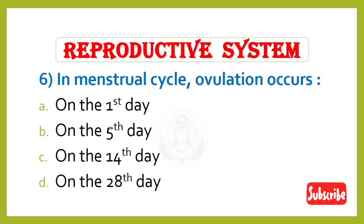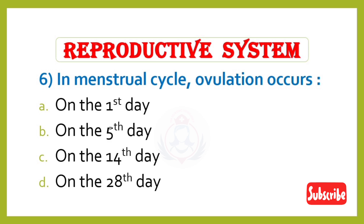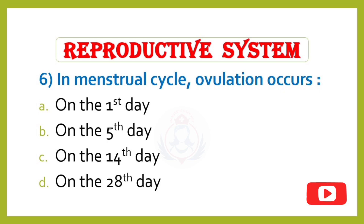Question 6. In the menstrual cycle, ovulation occurs: Option A – on the first day, Option B – on the fifth day, Option C – on the fourteenth day, Option D – on the twenty-eighth day. Correct answer is Option C: on the fourteenth day.